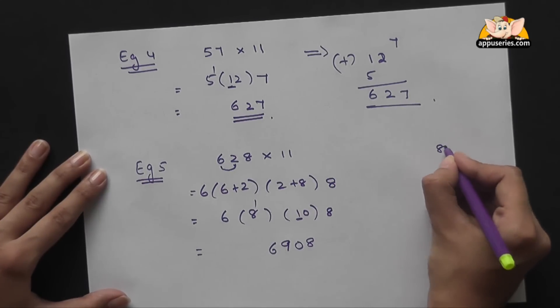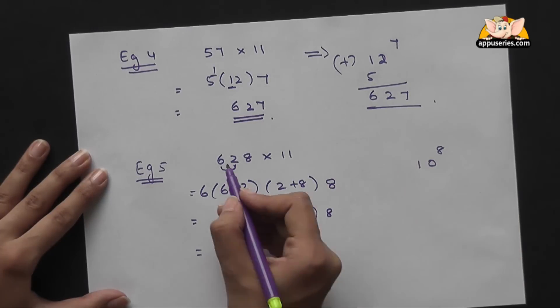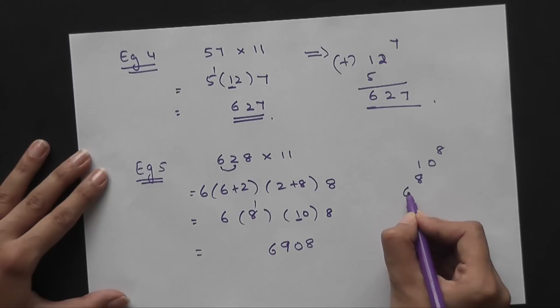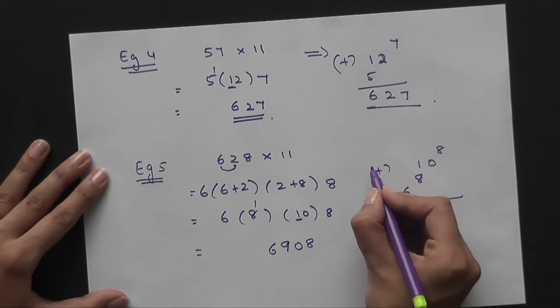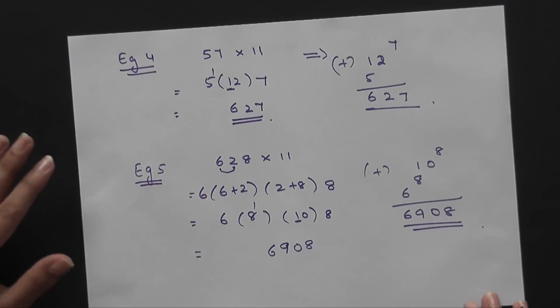And then you write the 6. When you add it up you get 6908. Pretty fast, right?